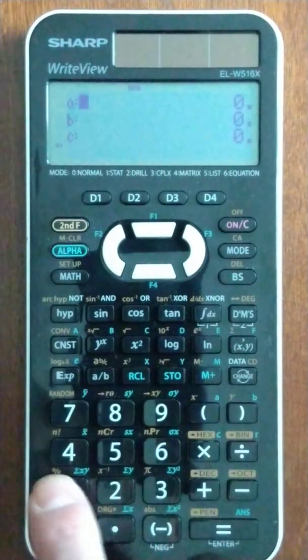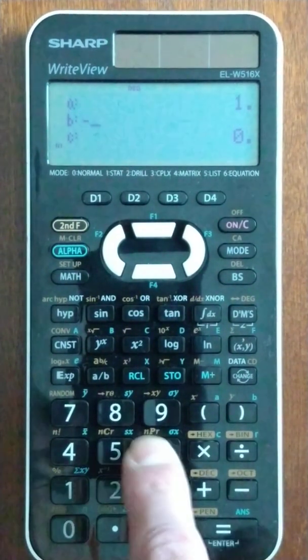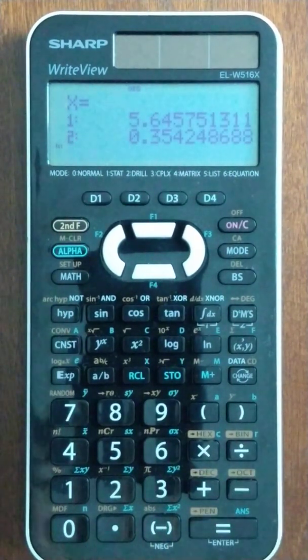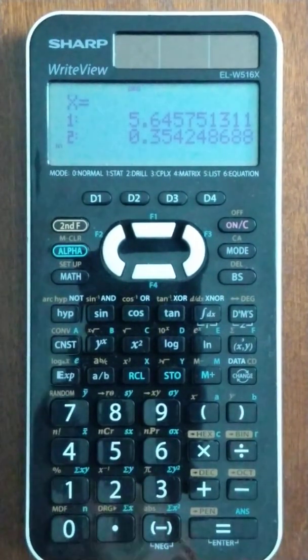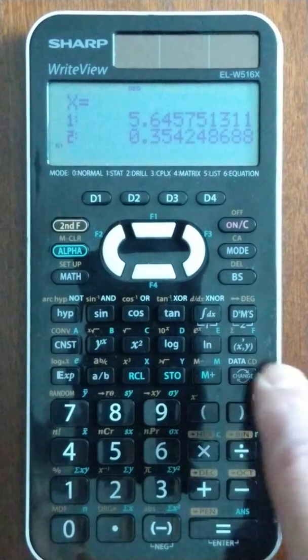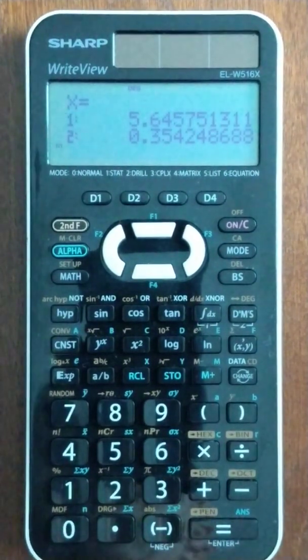We put in our coefficients of 1, negative 6, and 2. And we get our two roots on the screen at the same time, which I like that. But no way to change it, though. No way to get the exact values.